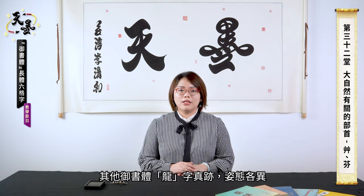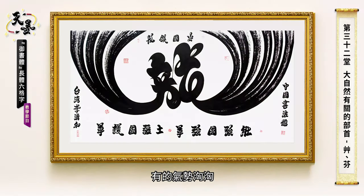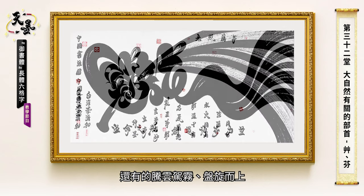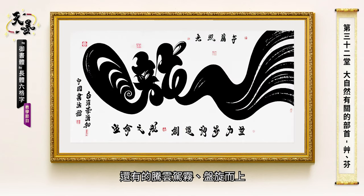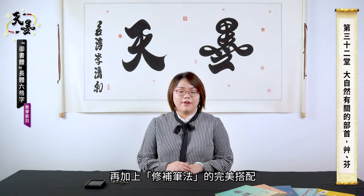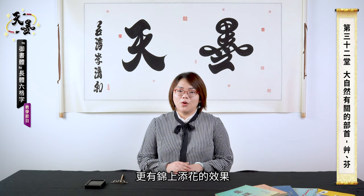The other works about Long have different styles — some are aggressive, some are triumphant, and some show a dragon riding clouds. The exclusive character shapes and strokes make the works become stereoscopic. Combining with the mending scale technique, we can make them even more perfect.